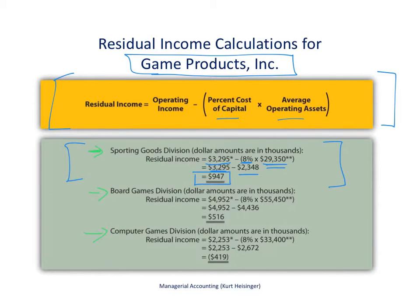Running the same calculation for the other two divisions, the board games division has a residual income of $516,000, while the computer games division actually has a negative residual income — a loss — of $419,000.